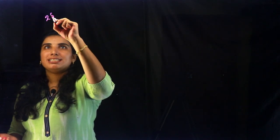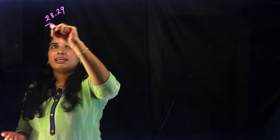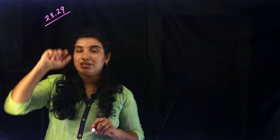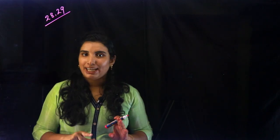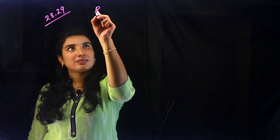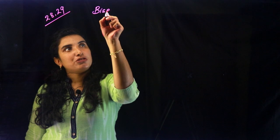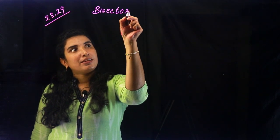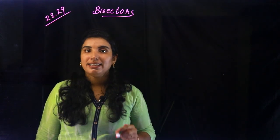Now we will go to page 28 and 29. There are a number of pages on page 28 and 29. This is Bisectors — we are going to study the Bisectors.